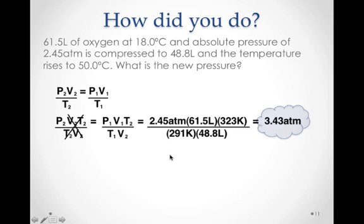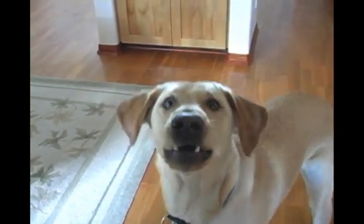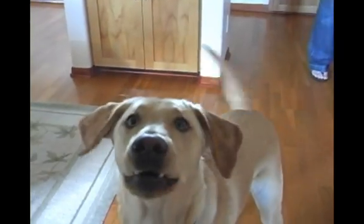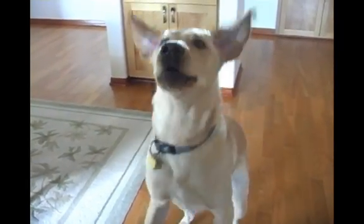Plugging in for all of this, we have the atmospheric pressure, the volume, and then the new temperature. Here, the 50 degrees, that's the temperature after compression. So, 50 plus the 273 is 323, and then divided by the original temperature. So, 18 plus 273 is 291 Kelvin, and the final volume. Plugging all that in, we get 3.43 atmospheres of pressure.